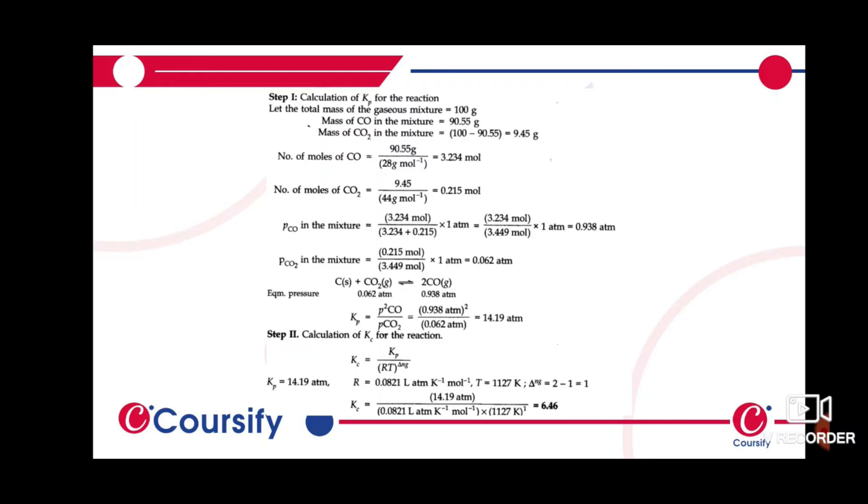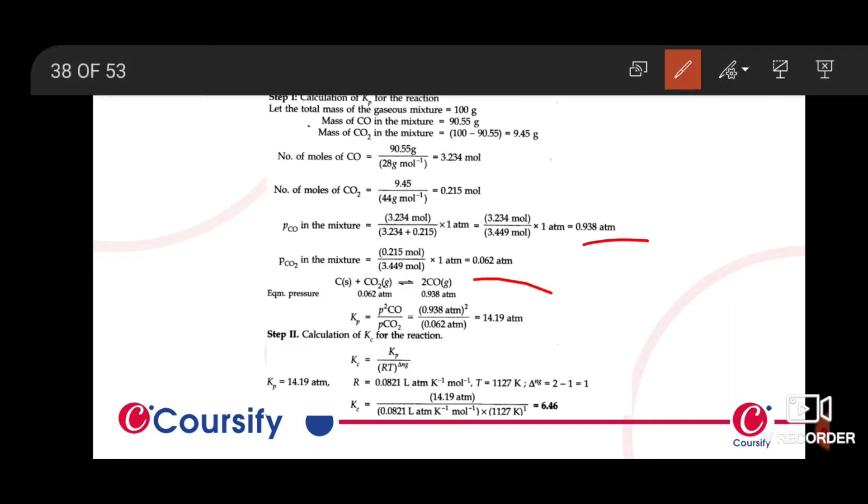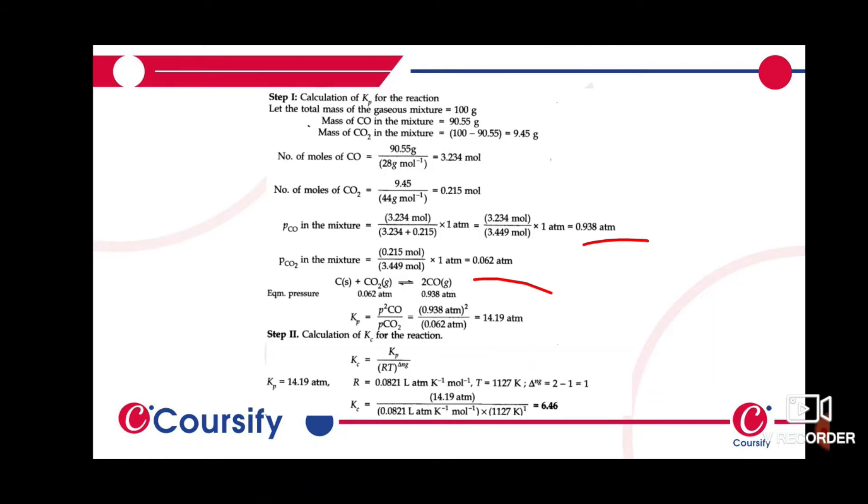Next we calculate partial pressure using mole fraction. Carbon monoxide partial pressure is 3.234 divided by (3.234 plus 0.215) times 1 atm. The equilibrium pressure for carbon dioxide is 0.062 and for carbon monoxide is 0.938. Carbon is solid, so both have partial pressures.